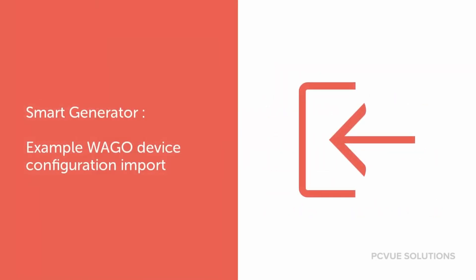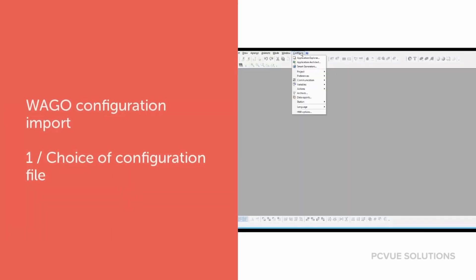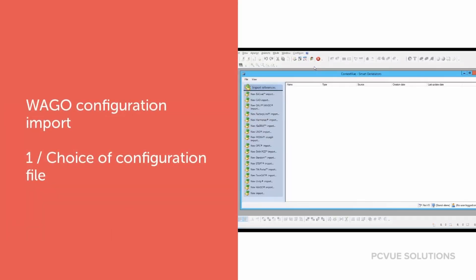As an example, we cover in this episode a VAGO device configuration import. In few clicks, the PCView project can be generated with the VAGO configuration elements.